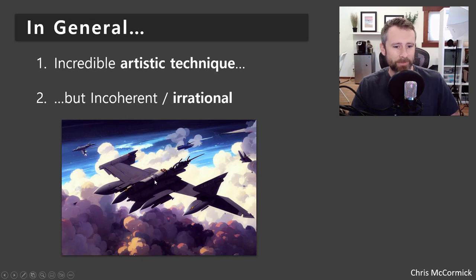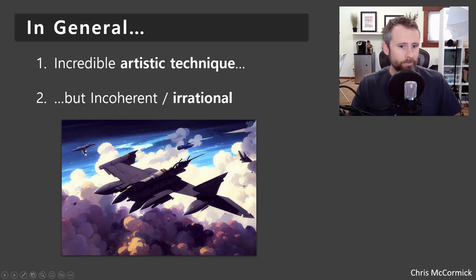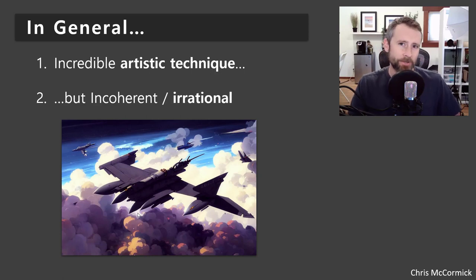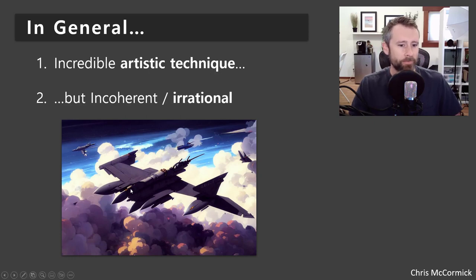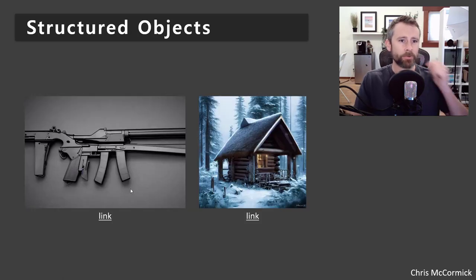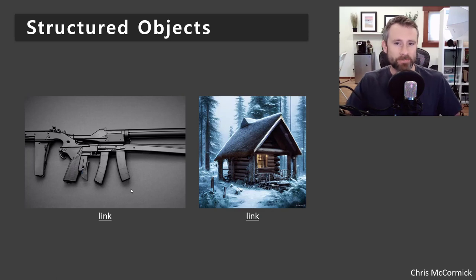One of my favorite examples is this fighter jet. It's certainly very novel — I've never seen a jet look like this before, and it's painted beautifully. But the model doesn't understand that there are certain requirements to a jet: it tends to be symmetrical, aerodynamic, tends to have one or two engines, cockpit in front. In general, structured objects seem to be a problem — objects where there are requirements to what it should look like based on its function.